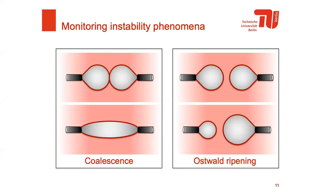Moving on to the stability of an emulsion, you can monitor oil droplet coalescence and Ostwald ripening in this system. The experimental setup is modified so that you have two needles, through which you can bring into contact or close vicinity two oil droplets in a liquid environment of your continuous phase. You can monitor either the change in volume over time in the case of Ostwald ripening, or the time until droplet coalescence occurs, to get an idea of how fast physical instability phenomena will change your emulsion.